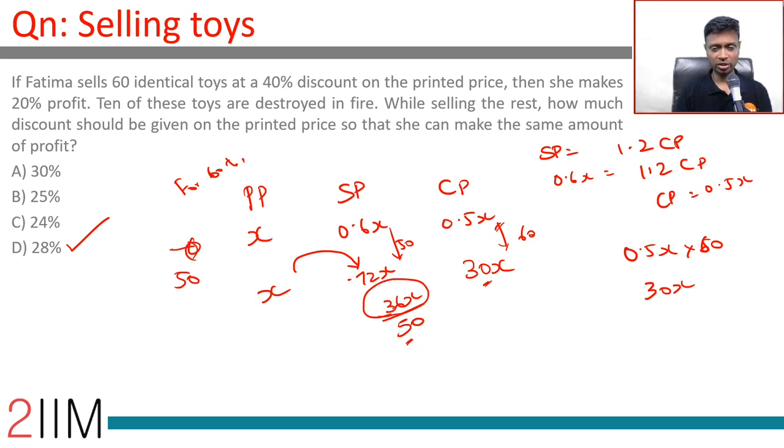She has only 50 items to sell now, so 36x have to be sold for 50 items. Each good is 0.72x, or what was at x now has to be sold at 0.72x, or we can discount by 28%.